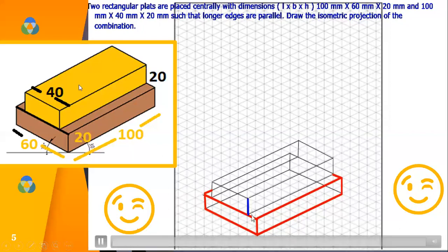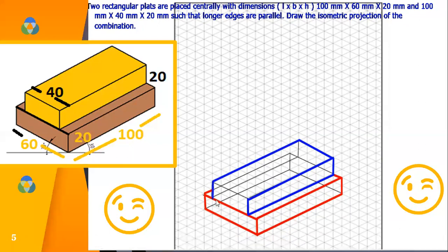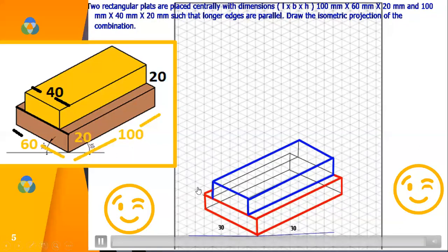Now the second slab. I can see this part, only the portion inside it will be hidden. So the hidden lines can be in projection line thickness or you can erase also. So here also you can see the hidden lines, so only the outer edges will be visible to you. So this completes the slab, second slab. So the first slab placed above the other.